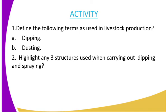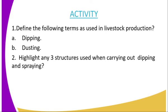For today's lesson, I am going to give you some questions. The first question: define the following terms as used in livestock production — 1A, dipping, and 1B, dusting. And number two, highlight any three structures used when carrying out dipping and spraying.